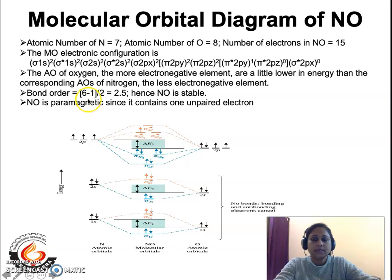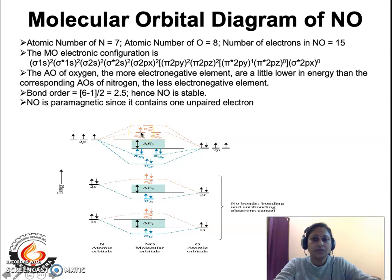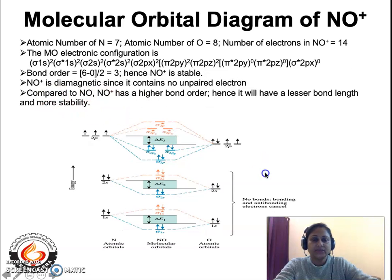Since the bond order is greater than 0, the NO molecule is stable. NO has 1 unpaired electron in the pi star 2pz molecular orbital, so the NO molecule is paramagnetic in nature.